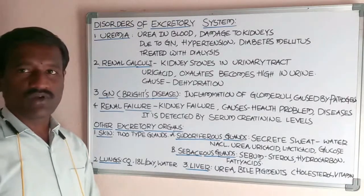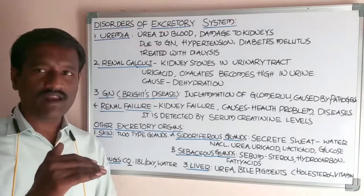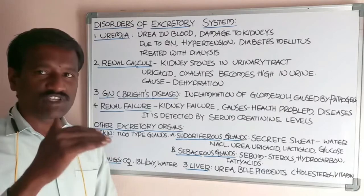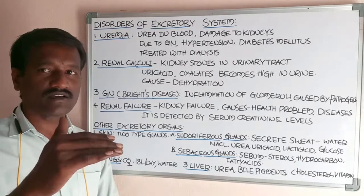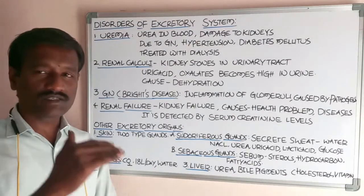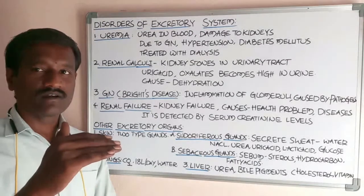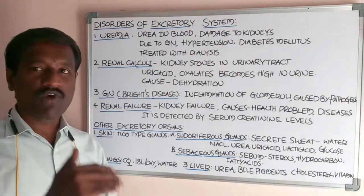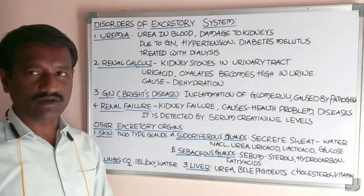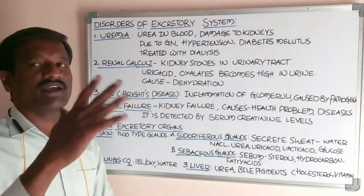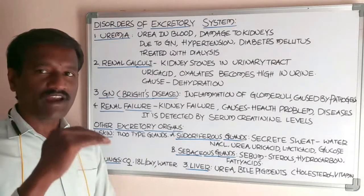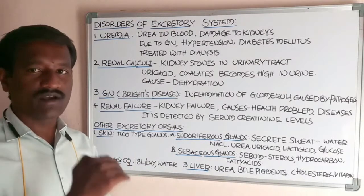Another excretory organ is the lungs, which are the main respiratory organs in human beings. The lungs also act as additional excretory organs. Lungs eliminate carbon dioxide and water molecules in the form of water vapor during exhalation. Lungs eliminate approximately 80 liters of carbon dioxide per day.